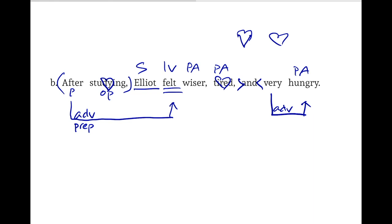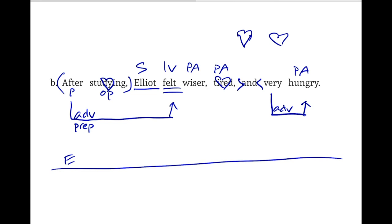First we'll draw a horizontal line across the page, and then we'll start with the subject — we always start with the subject. The subject, in this case, is Eliot. I'll draw a bisecting line to separate the subject from the predicate. And our predicate, of course, involves the verb FELT. So I'll record the word FELT there, and then we know that he FELT wiser, tired, and very hungry — with predicate adjectives.